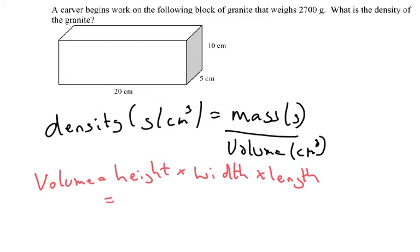So the height, that's 10 centimetres, the width is 5 centimetres, and the length is 20, which gives us 1000 centimetres cubed.